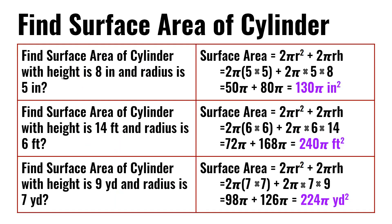Find the surface area of a cylinder with height 8 inches and radius 5 inches. 2π(5×5) + 2π×5×8. 5×5 is 25; 25 times 2π is 50π. 5×8 is 40; 40 times 2π is 80π. 80π plus 50π is 130π inches squared.